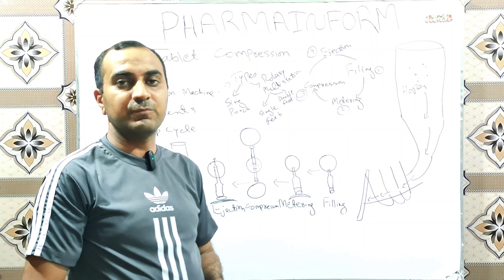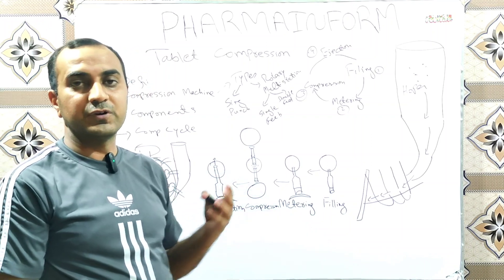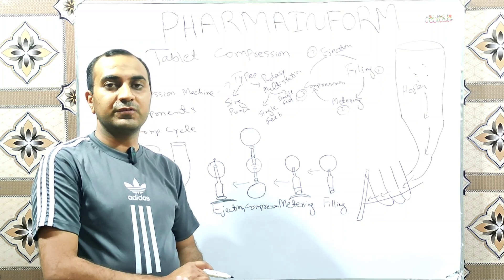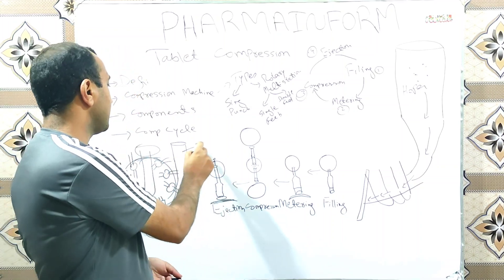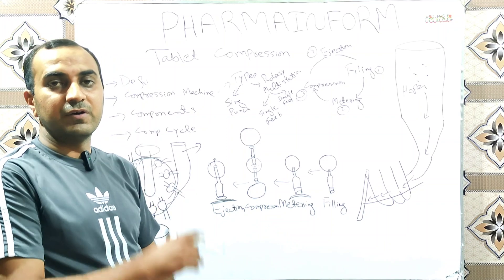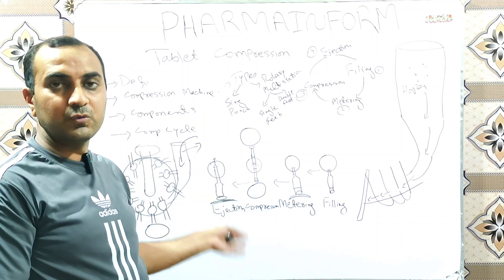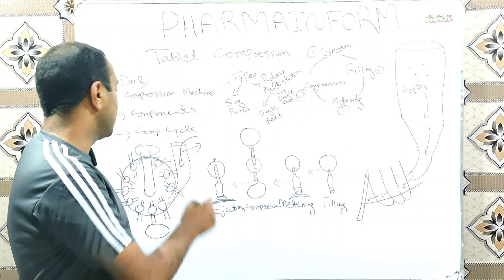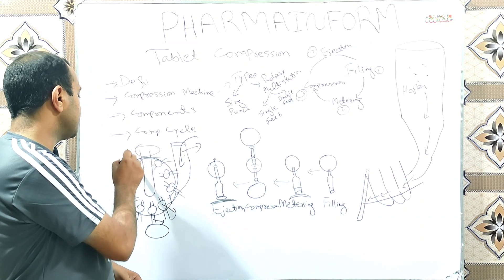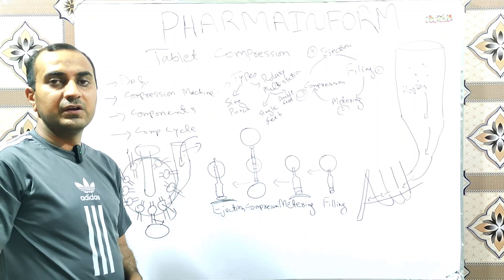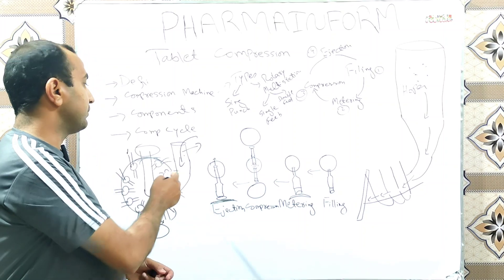We will discuss in detail all the components and parts of the compression machine and the cycle or stages. A compression machine mainly has a hopper — a device or structure in which we add our powder or granules, from where it flows toward the dies for filling. We also have feed frames, dies, lower punches, upper punches, and a round structure known as a turret, which contains the die table where dies are installed.